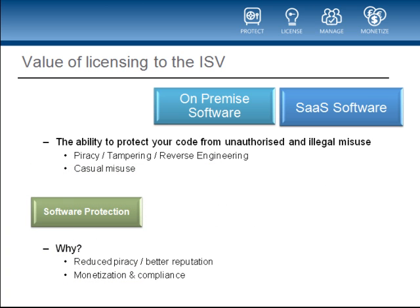The third benefit of software licensing is code protection. The software developer needs to protect their core IP from misuse when they send it out into the marketplace — whether this is protection against deliberate acts like reverse engineering or tampering, or to prevent casual piracy like seat sharing. This has always been important for the ISV. Effective code protection means less piracy, better monetization and much better compliance. When you move to SaaS, assuming the cloud service provider is a trusted environment and your application is a true multi-tenant SaaS application, you have greatly reduced the risk of piracy, tampering and reverse engineering. But for a hybrid model where there is still some software being deployed at the client side, or if it's a private cloud environment, there may still be protection concerns.